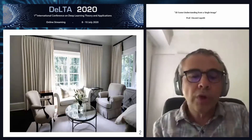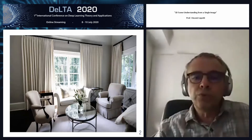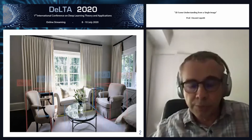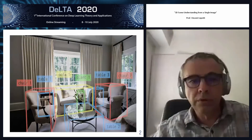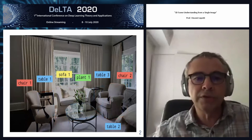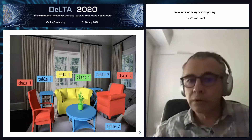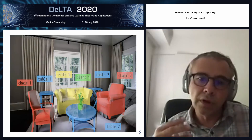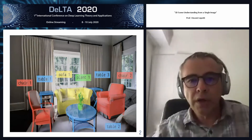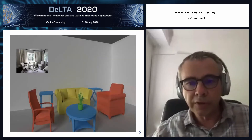So what do I mean exactly by 3D scene understanding from images? What we would like to do is to recognize objects given a single color image with no depth information, recognize those objects, estimate their 3D pose in the environment, and also their 3D geometry, so that we can get basically something like a 3D reconstruction.